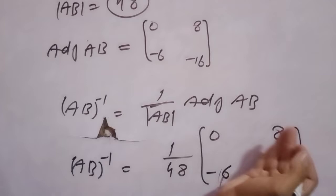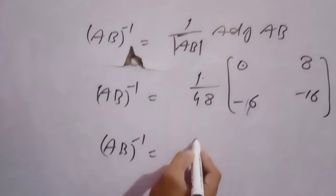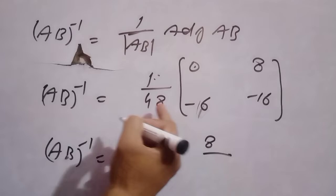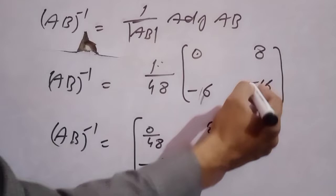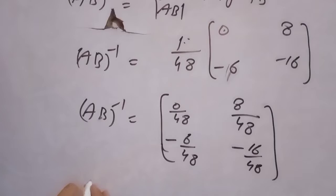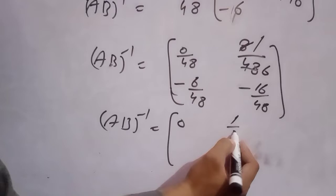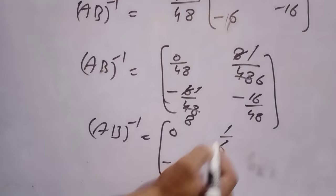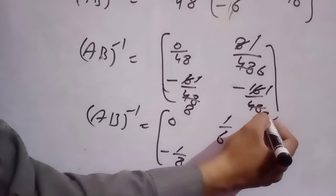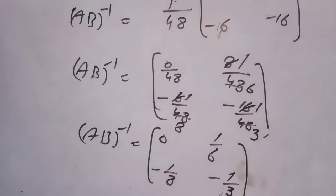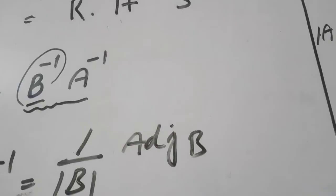1 over 48 को अंदर multiply करें: AB whole inverse equal to 0 over 48, 8 over 48, minus 6 over 48, minus 16 over 48. Students अब इसकी cutting होगी: 0÷48 = 0; 8÷48 = 1/6 (8 daa 8, 6 daa 48); minus 6÷48 = minus 1/8 (8 daa 48); minus 16÷48 = minus 1/3. Students यह थी इसकी left hand side।